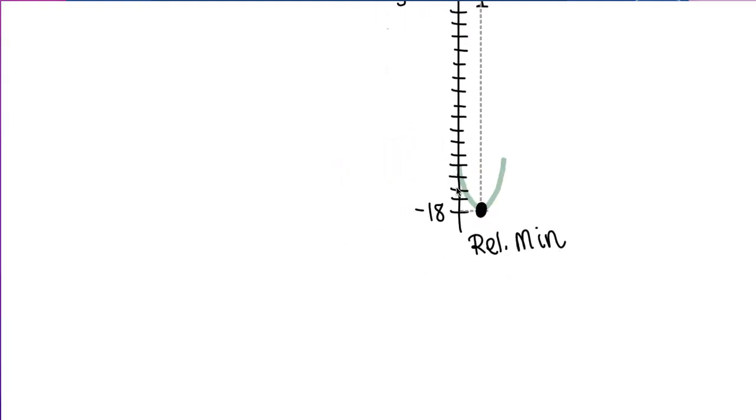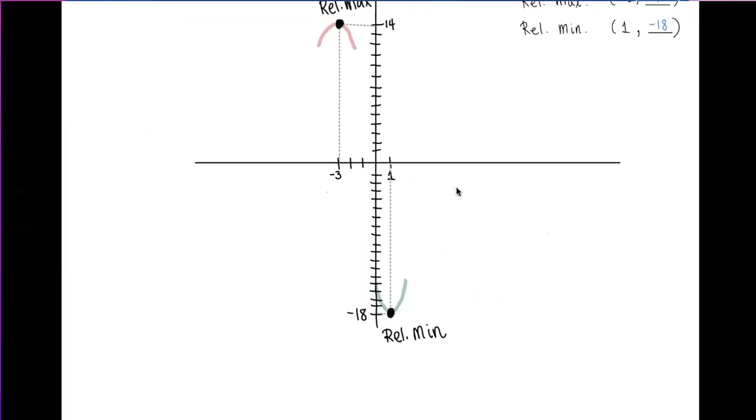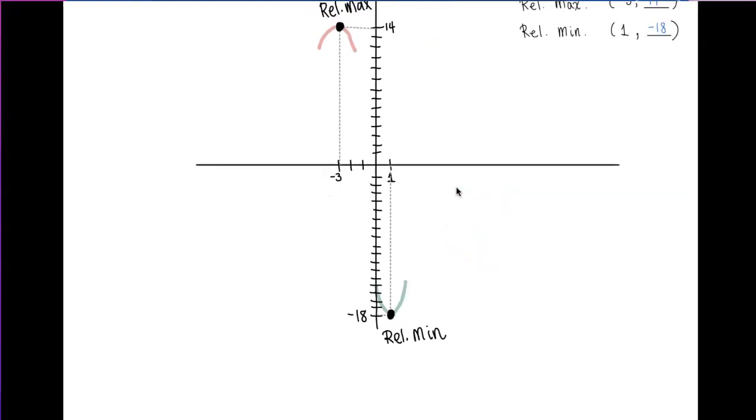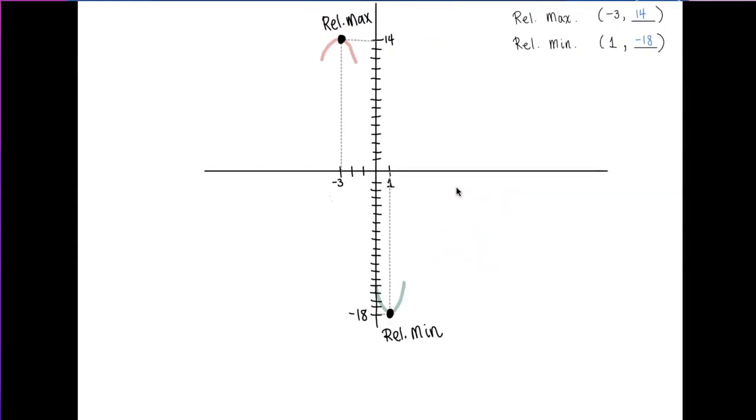Now once you sketch what the graph should look like at these special points, we just connect lines. So what I know is that this graph will go down to that point. It has to go down, right? And then from this point on, we're going to just go up. And from this point to the left, the end behavior is going down. So look at this for me. We sketch a graph.